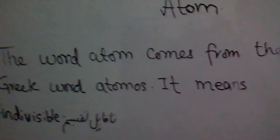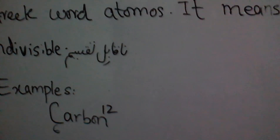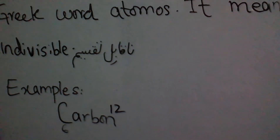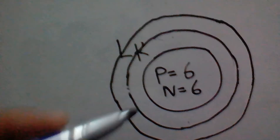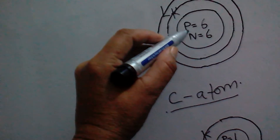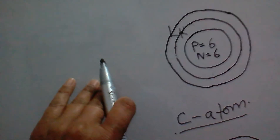We can take a few examples of Atom. The first example is that of Carbon Atom. We will also learn how to draw the structure of Carbon Atom. Carbon Atom has six protons in the nucleus and neutrons are also six. This is the structure of Carbon Atom.